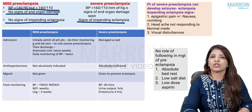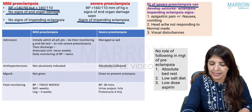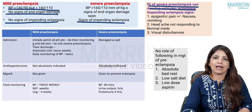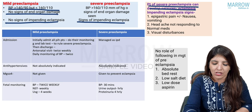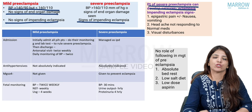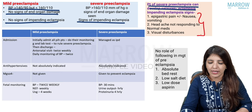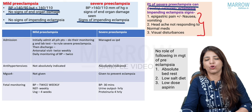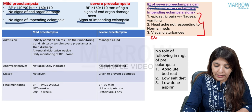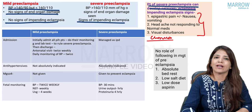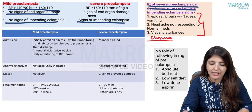A patient of severe preeclampsia can develop convulsions — that is called eclampsia. In severe preeclampsia, certain signs and symptoms indicate the patient is about to throw convulsions — these are symptoms of impending eclampsia: epigastric pain plus/minus nausea and vomiting, headache not responding to normal medications, and visual disturbances. A sign of impending eclampsia is clonus.